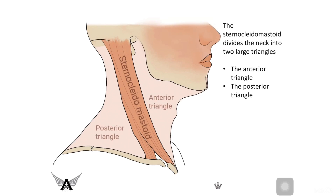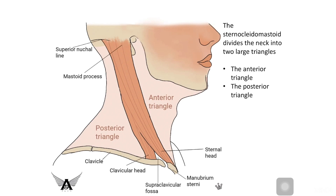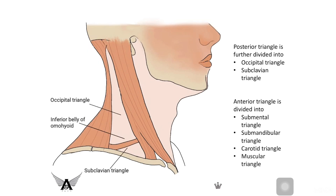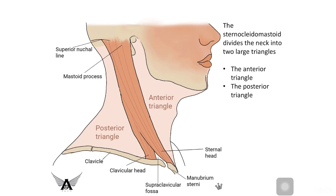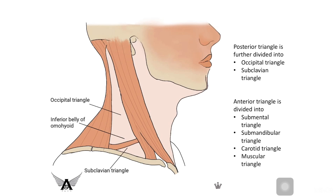The sternocleidomastoid originates from two regions: the sternal head begins from the manubrium sternum, and the clavicular head originates from the medial third of the clavicle. The insertion is into the lateral surface of the mastoid process.